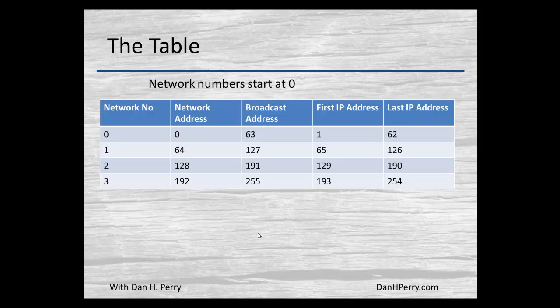Network numbers start at zero. There are four networks, numbered zero through three. The first network's last octet address starts at zero, and since there are 64 IP addresses per network, in each network number going down we add 64 — so 0, 64, 128, and 192 for our network numbers. The broadcast address is one less than the network number for the next network, except for the last one which is 255 — so we've got 63, 127, and so on.